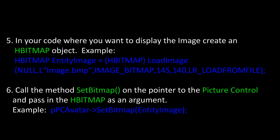Finally, once you've done this, just call the method SetBitmap on the pointer you have set up to your picture control, passing in the HBITMAP as an argument. Then you're all set — your image will display.